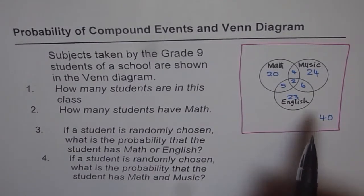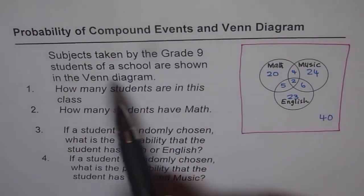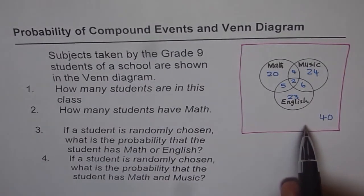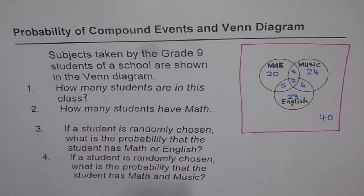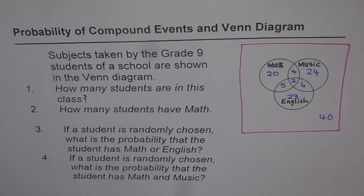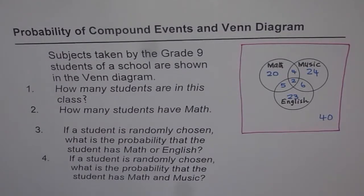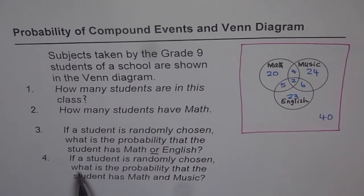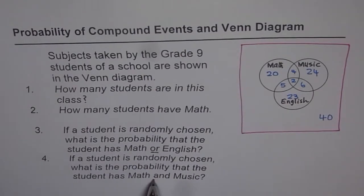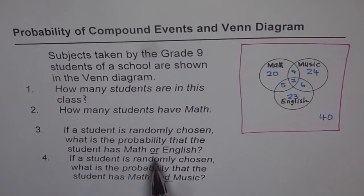Now let's understand the questions. It says: subjects taken by grade nine students of a school are shown in the Venn diagram. Question one: how many students are in this class? Question two: how many students have maths? Question three: if a student is randomly chosen, what is the probability that the student has math or English? Question four: if a student is randomly chosen, what is the probability that the student has math and music? I'm emphasizing the words 'and' and 'or' since they relate to addition or multiplication.